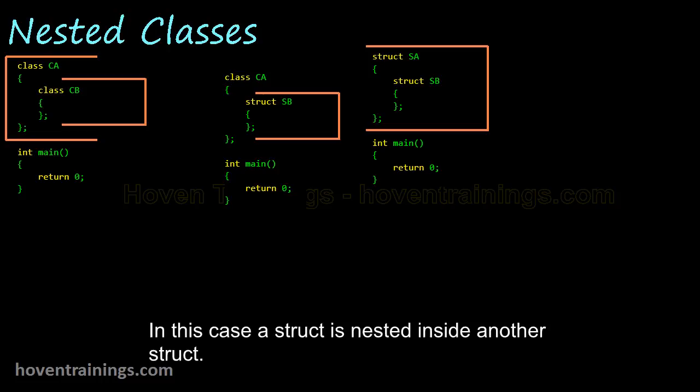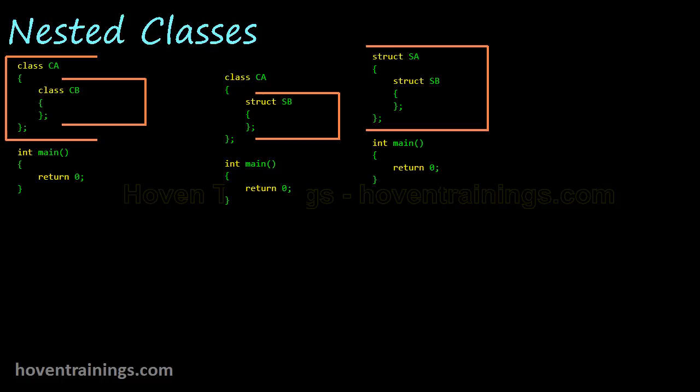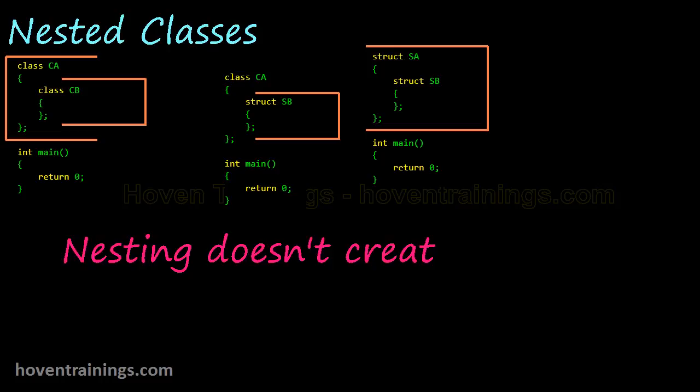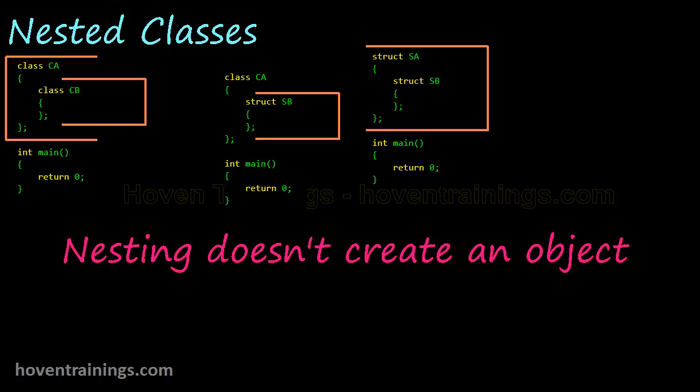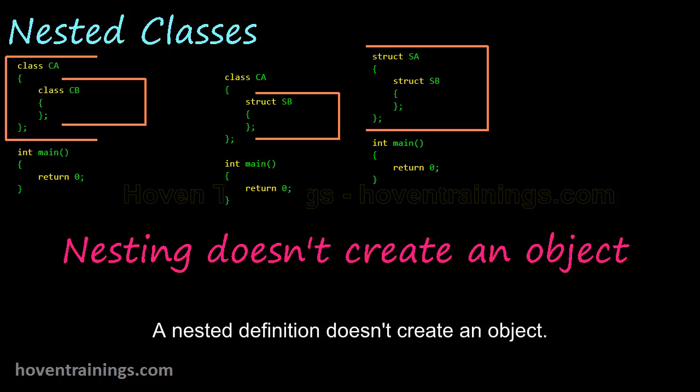In this case, a struct is nested inside another struct. In all the above cases, definitions only have been nested inside a parent class or struct. A nested definition doesn't create an object — the object has to be created separately.